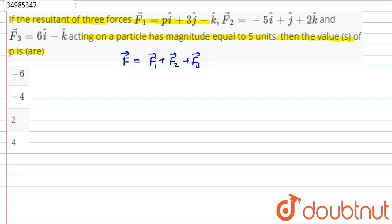So we calculate the components. The i component: P minus 5 plus 6, which is P plus 1 i cap. The j component: 1 and 3 is 4, so 4 j cap. And the k component: minus 1 plus 2 and minus 1, which is 0 k cap.